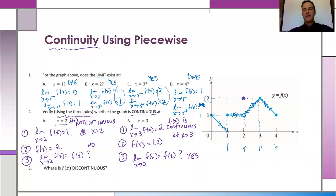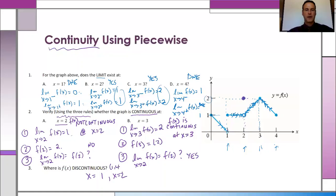Where is f of X discontinuous? Certainly at X equals one — the limit doesn't exist, so it cannot be continuous. It's also not continuous at two. But it is continuous everywhere else between one and four. On the AP free response test, this is the script they want in order for you to demonstrate your understanding by definition of what continuity is.